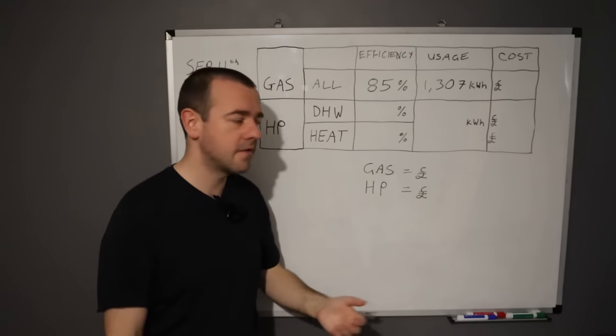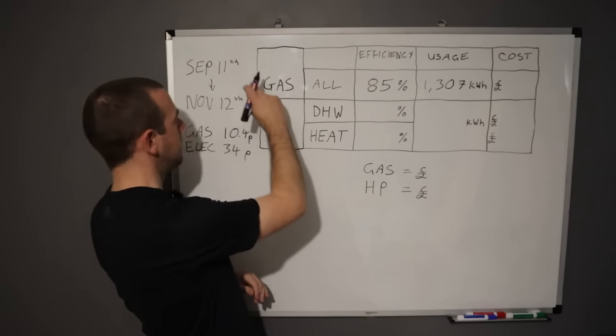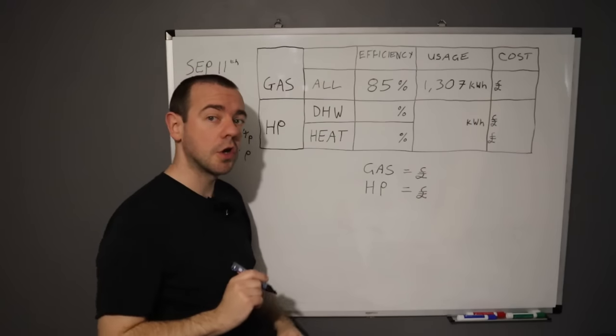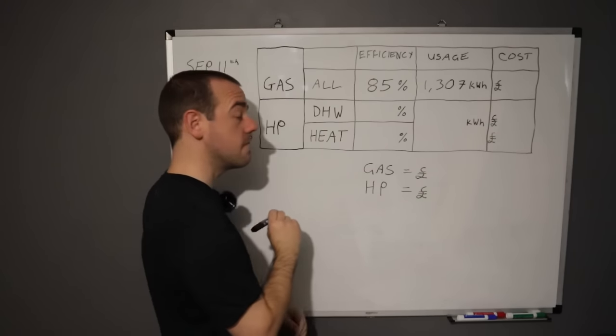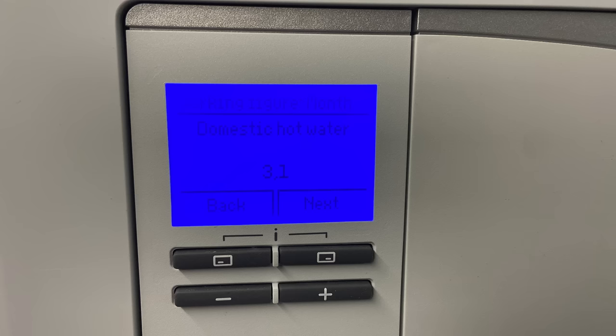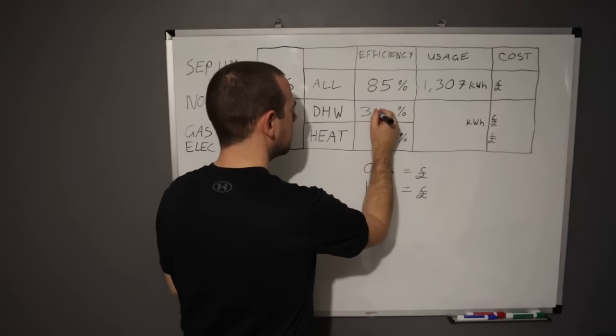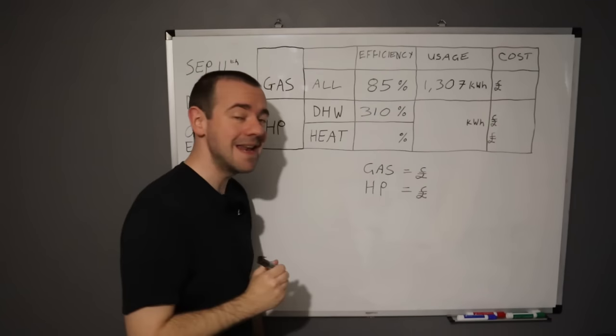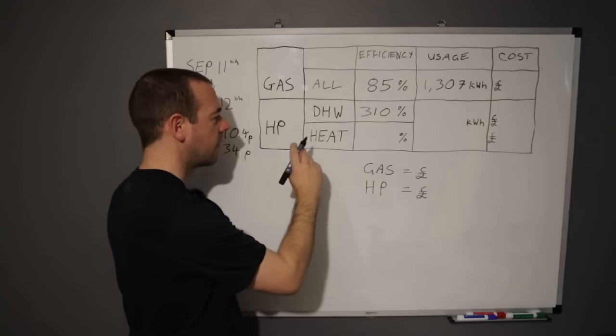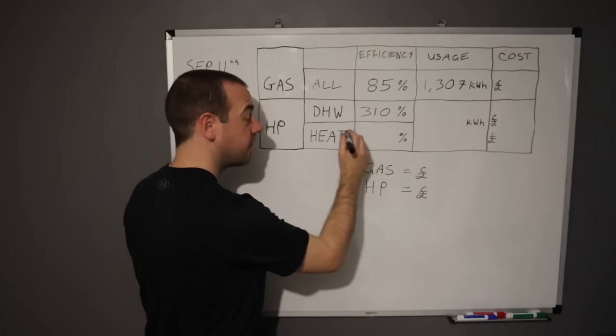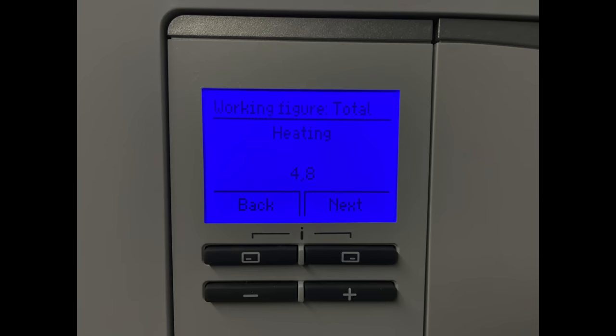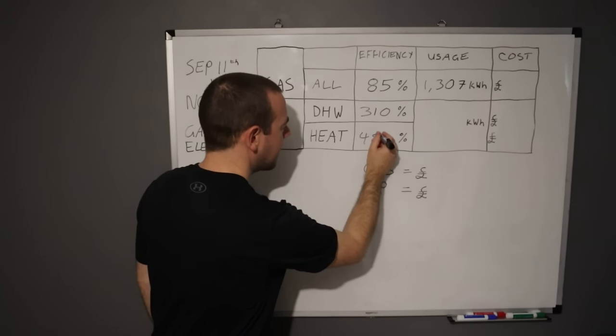Legionella is taken care of with cycles. That sees us through the day until it heats up again the following day. So far in this two month period we have got a COP for hot water of 3.1 or as I prefer to say it, 310% efficient. For heating we have got a COP of 4.8 or 480% efficient.